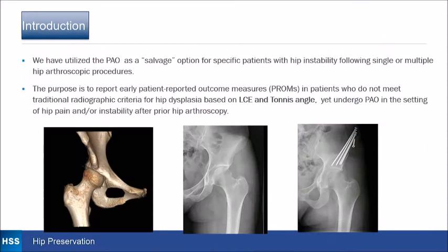We've utilized the PAO as a salvage option for specific patients with hip instability following single or multiple hip arthroscopic procedures. We wanted to report on our outcomes in patients who do not meet the traditional radiographic criteria for hip dysplasia based on LCE and tonus angle, yet undergo a PAO in the setting of hip pain and instability after prior hip arthroscopy. Here's an example.